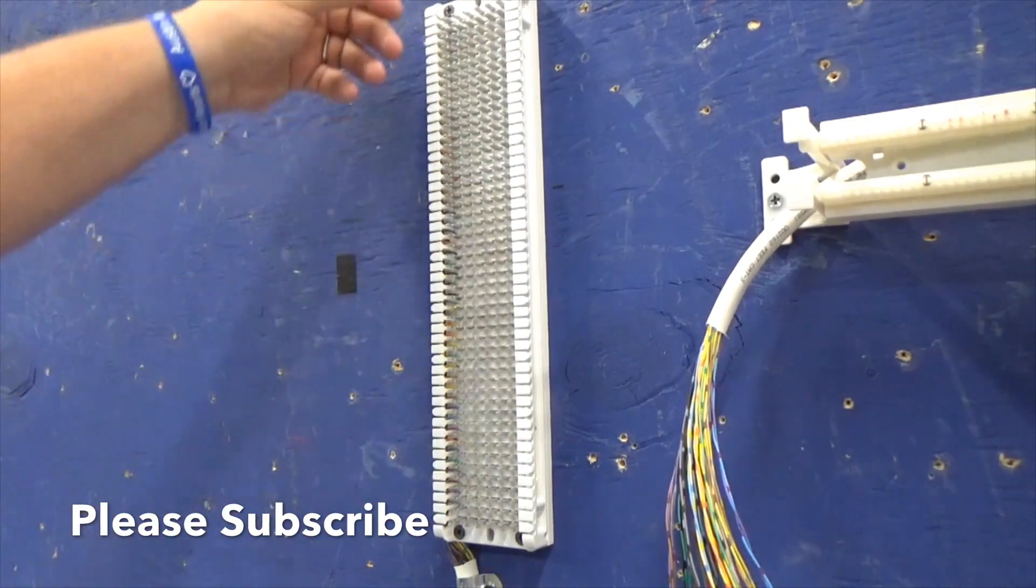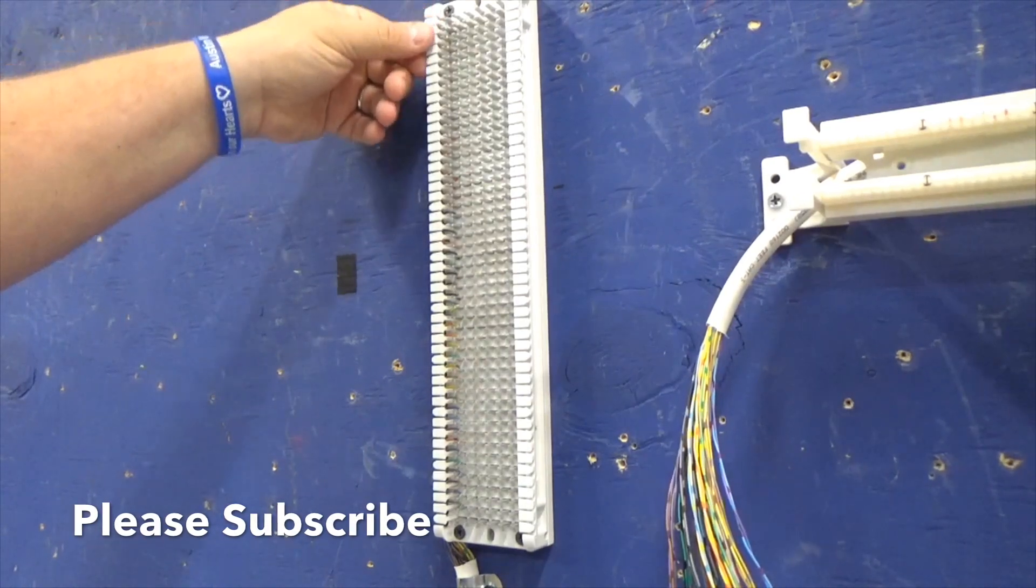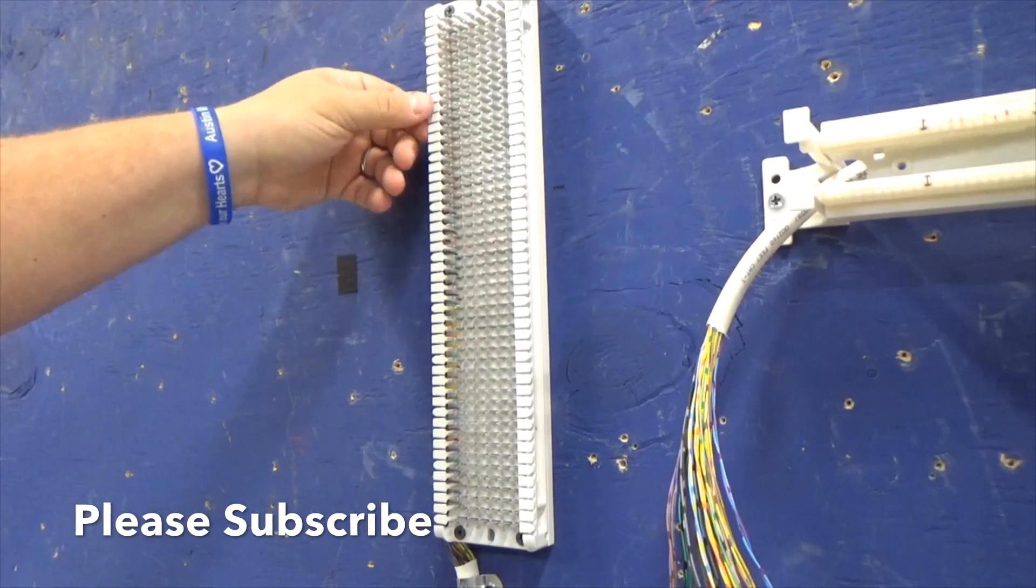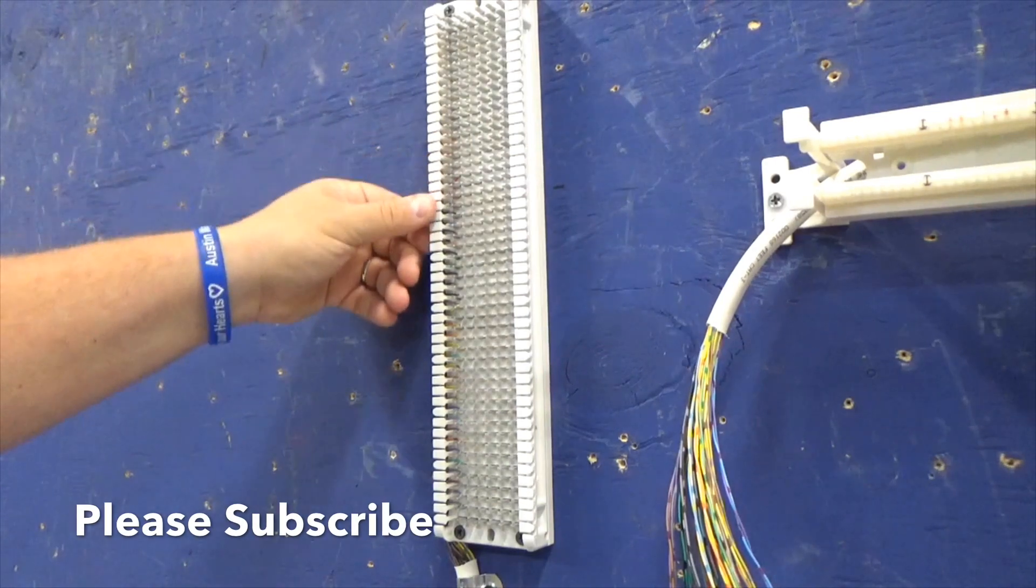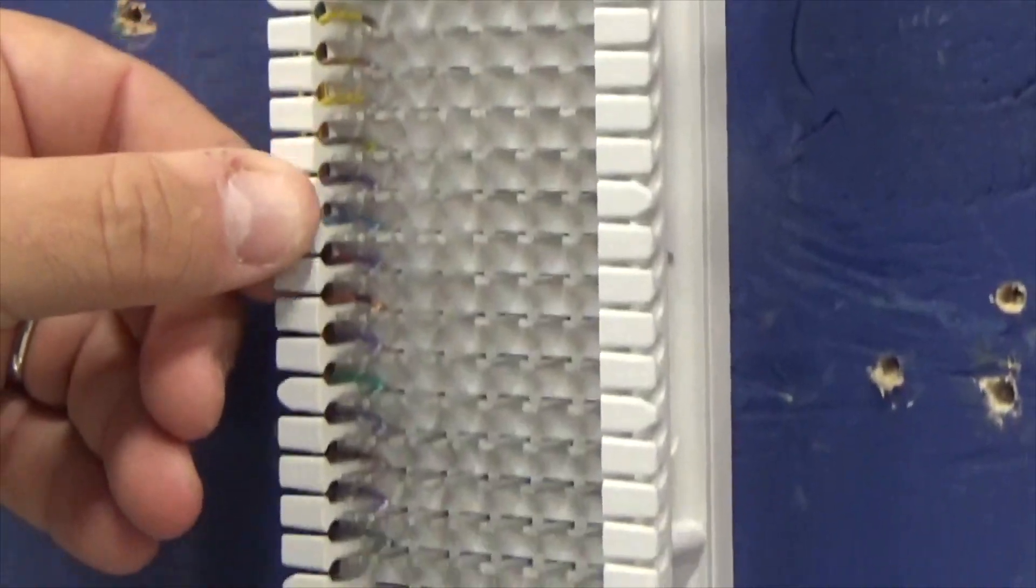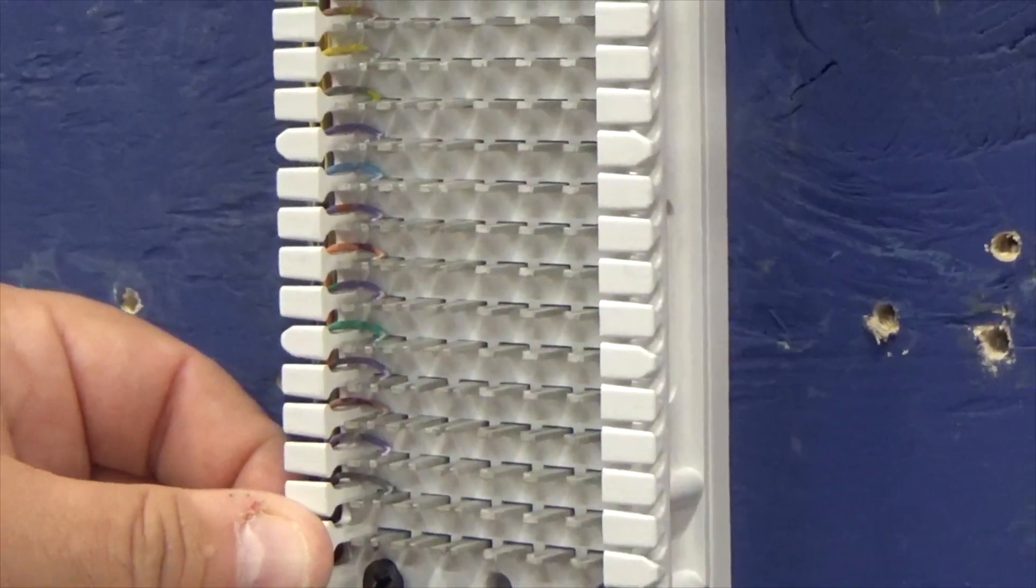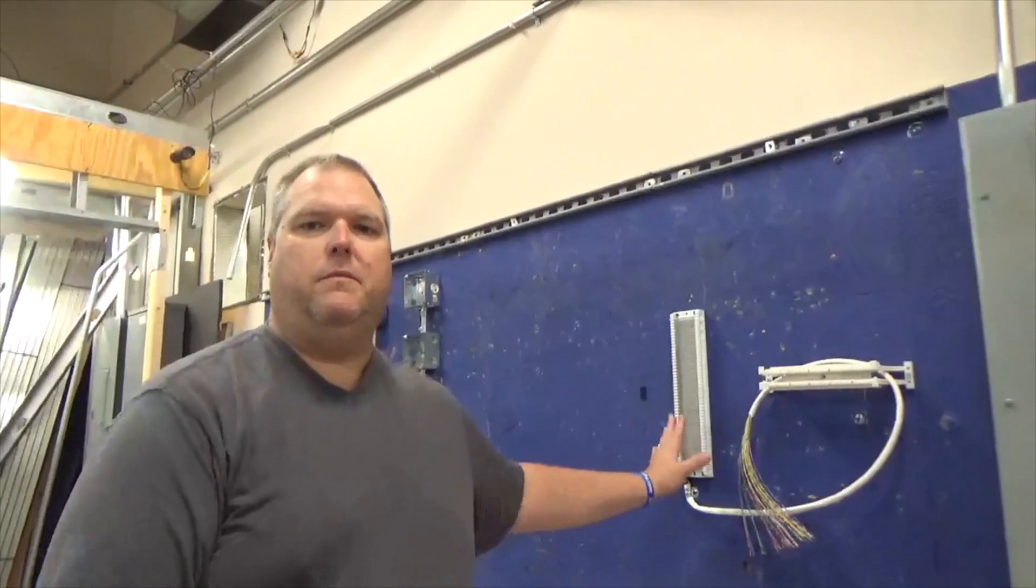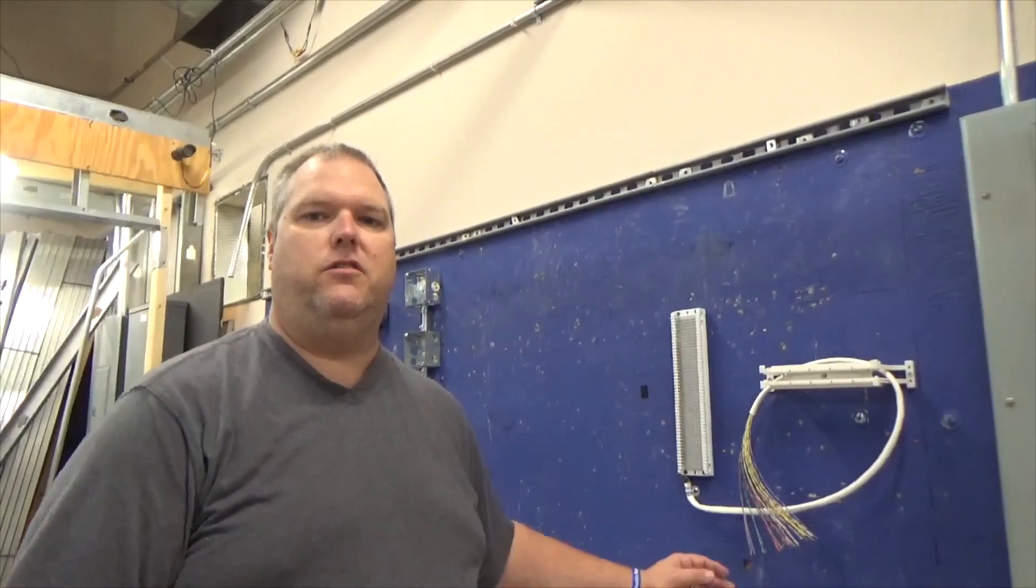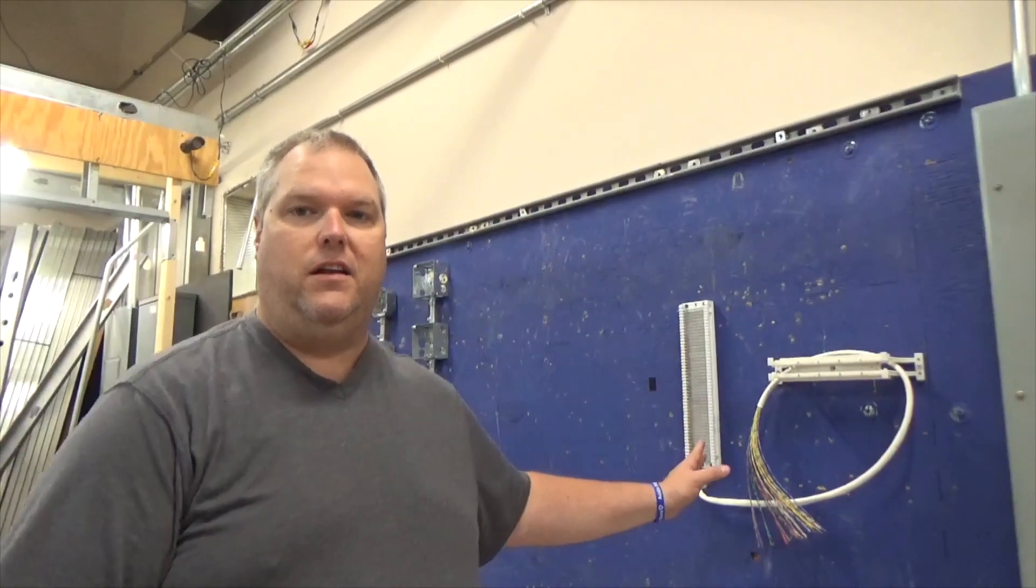So what you're going to do is you're going to start out with your white blue and then your blue. So your white pair is going to go here. Your red pair is going to go here. Your black pair is going to go here. Your yellow pair will go here. And then you'll see your violet pair that's going to go here. Now keep in mind, punching that down, you're going to use a 66 punch down tool for that. You're going to need the cut end of it also.